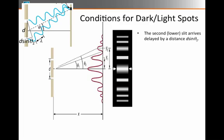The lower of the two wavelengths has to make up some extra distance. We can draw a little triangle, a right triangle, where the hypotenuse is d, the distance between the two slits. And if that's a right angle,